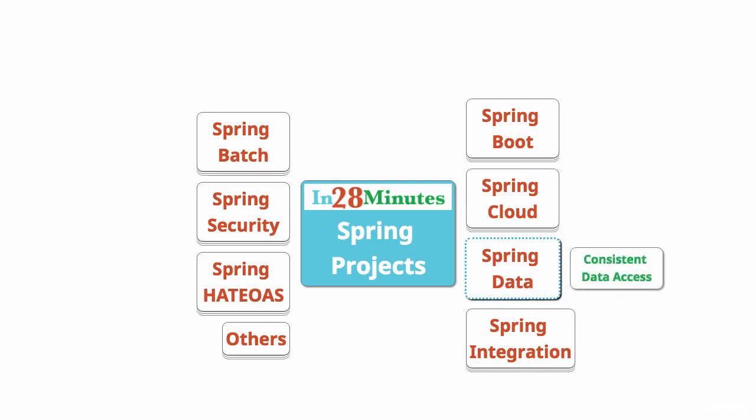Spring Data provides consistent data access. A few years back there was only one kind of database we typically connected to — a proper SQL database. Today there are abundant NoSQL databases. We have a wide variety of NoSQL databases as well as SQL databases. How do you ensure that the way you're accessing data from all these sources remains consistent? That's what Spring Data aims to solve.